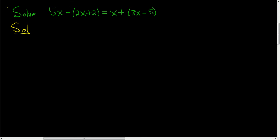We'll start by distributing. There's actually a 1 here and there's actually a 1 here, so we have 5x and then minus 1 times 2x is minus 2x and minus 1 times positive 2 is minus 2.